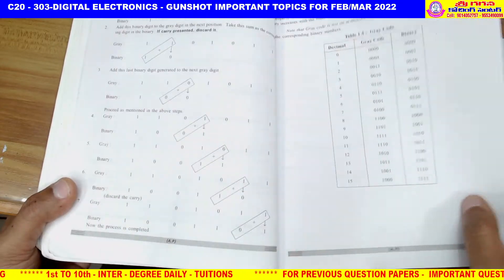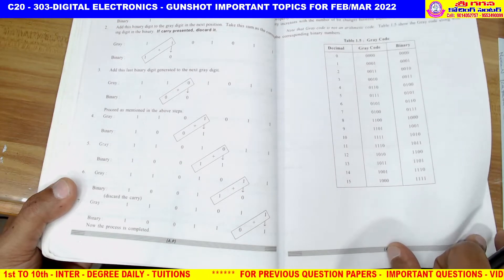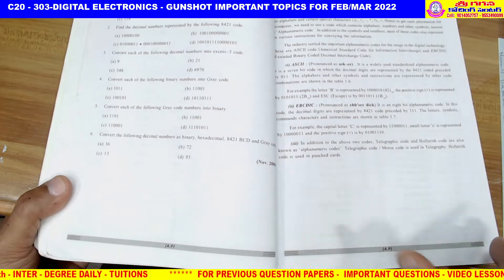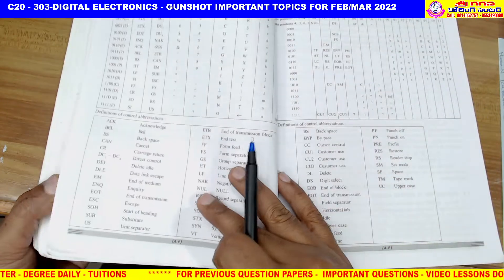Gray code is another important topic. You need to know binary to Gray and Gray to binary conversions. These conversions can appear as 3-mark questions.